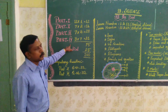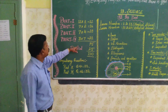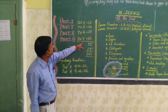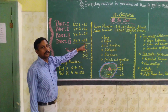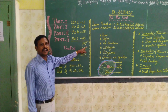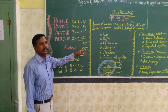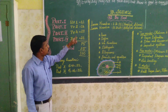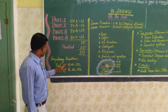Then Part 4: you have to write 3 questions, total 7 marks each. So 3 into 7 equals 21. So total number of marks is 75, including practical 25. So total mark is 100.